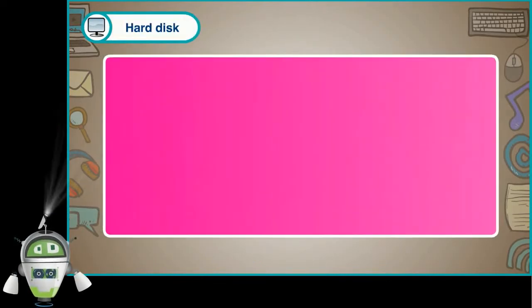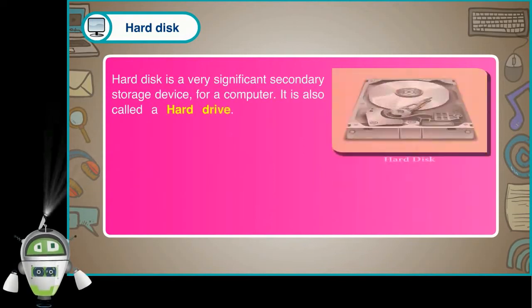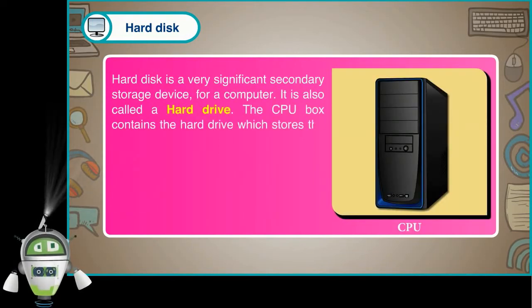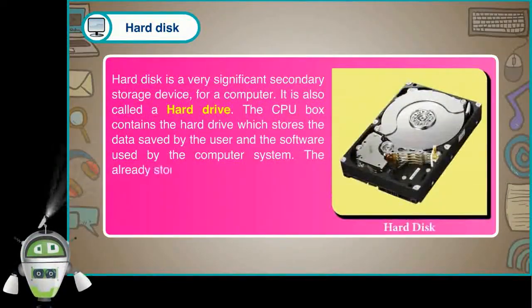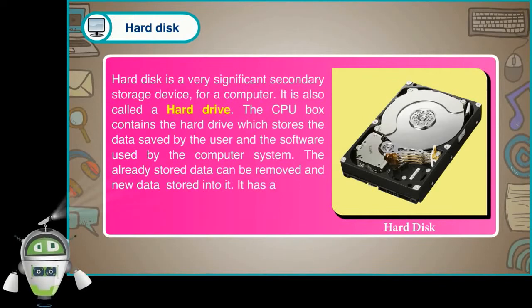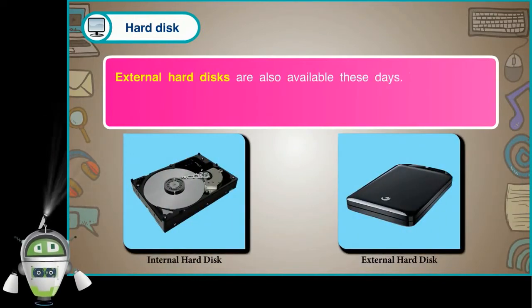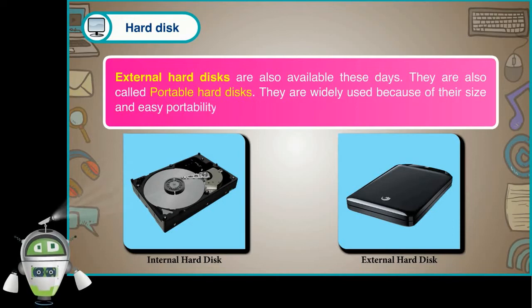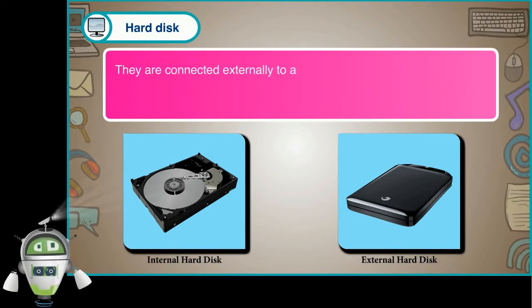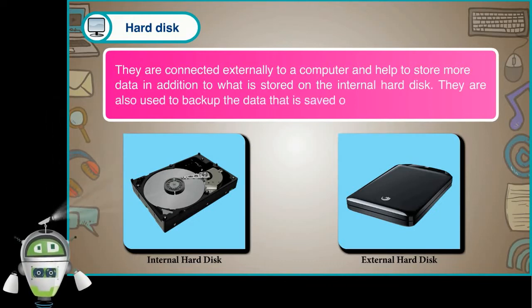Hard disk: the hard disk is a very significant secondary storage device for a computer. It is also called a hard drive. The CPU box contains the hard drive, which stores the data saved by the user and the software used by the computer system. The already stored data can be removed and new data stored into it. It has a huge capacity for storing data. External hard disks are also available these days — also called portable hard disks. They are widely used because of their size and easy portability. They are connected externally to a computer and are also used to back up data saved on the internal hard disk.